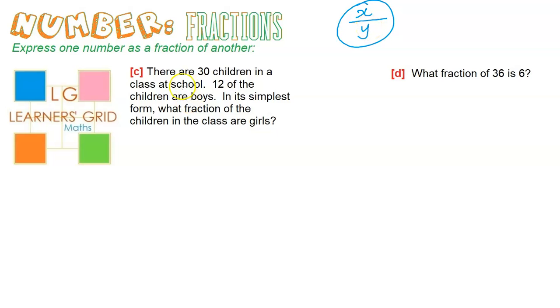Let's take a look at problem C and work it out. There are 30 children in a class at school, 12 of the children are boys. In its simplest form, what fraction of the children in the class are girls?